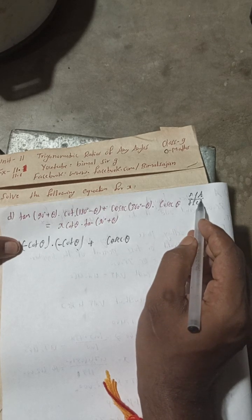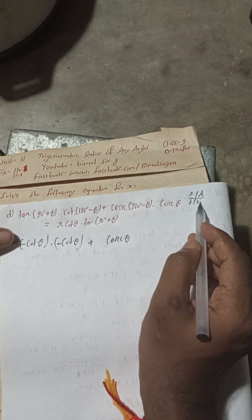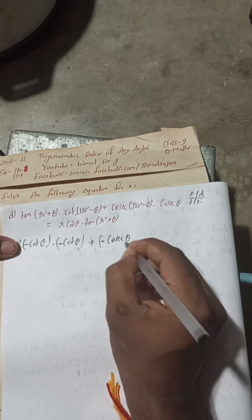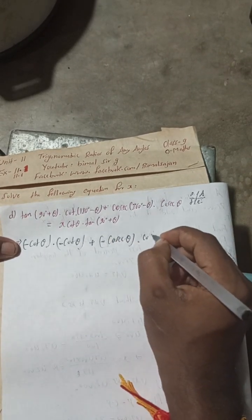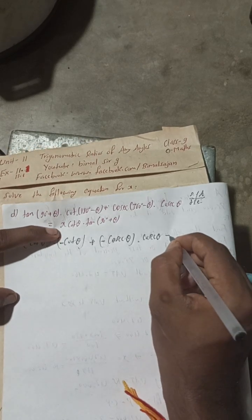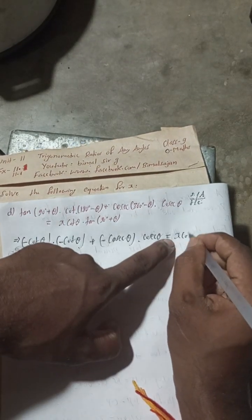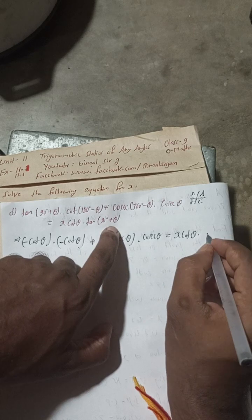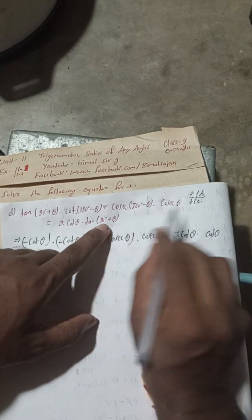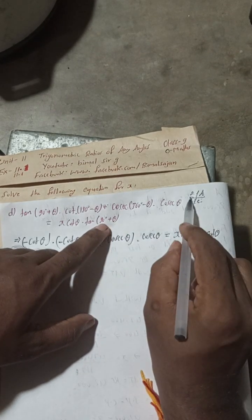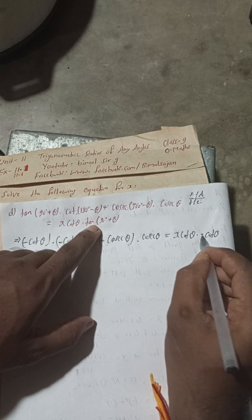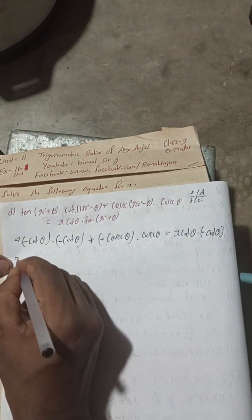360° − θ is in the fourth quadrant, where only cos and sec are positive. So cosec is negative, giving cosec(360° − θ) = −cosec θ. On the right-hand side, tan(90° + θ) is again in the second quadrant, so tan(90° + θ) = −cot θ.